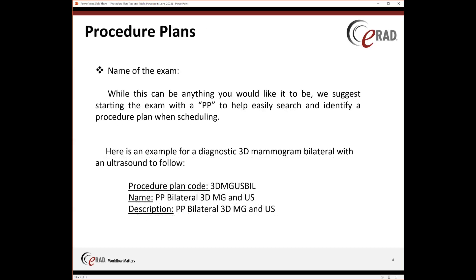For the example shown, it is set up as procedure code '3D MAMMO Ultrasound Bilateral' with a name of 'PP Bilateral 3D MAMMO and Ultrasound' and a description to match. That's just a pretty easy naming guideline. You also want your procedure code plans to make sense so that they're easily identifiable.